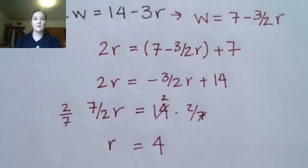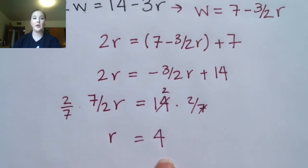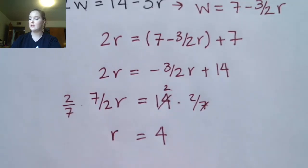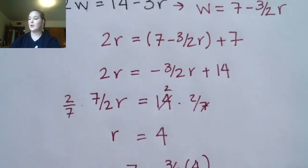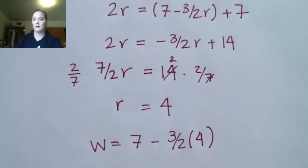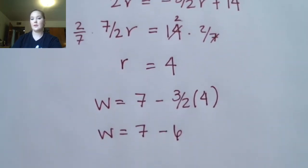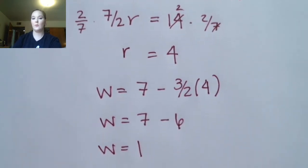Now I still need to get my value of W — this is a common mistake. Students will stop halfway through having only gotten the value for the first variable. So I'm going to go ahead and plug in here, using my value 4 for R. Three-halves times 4 is going to be 6, so I'm just going to get my value 1.